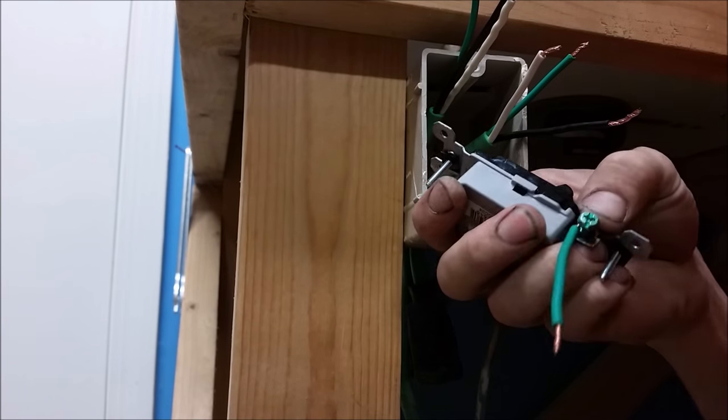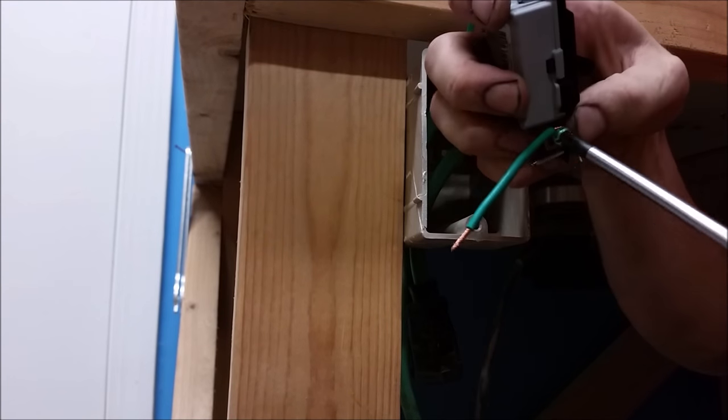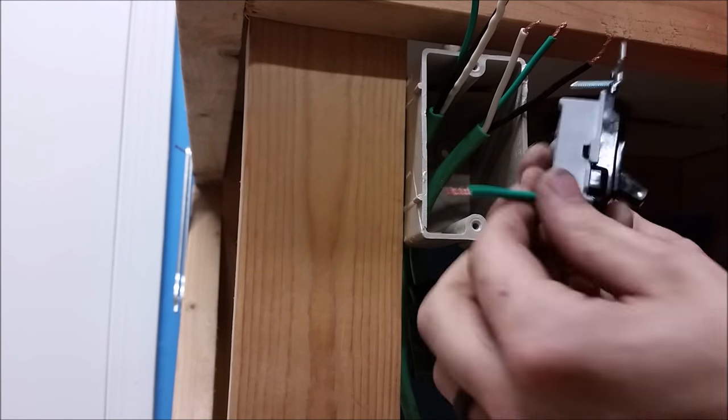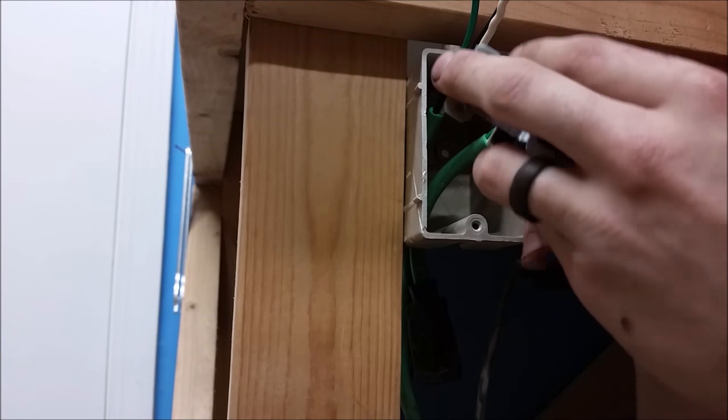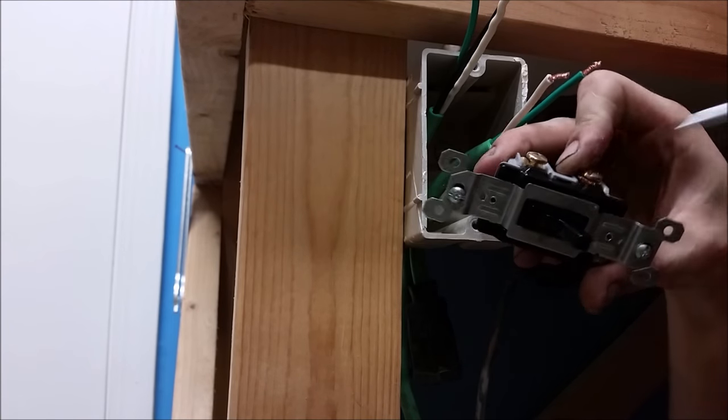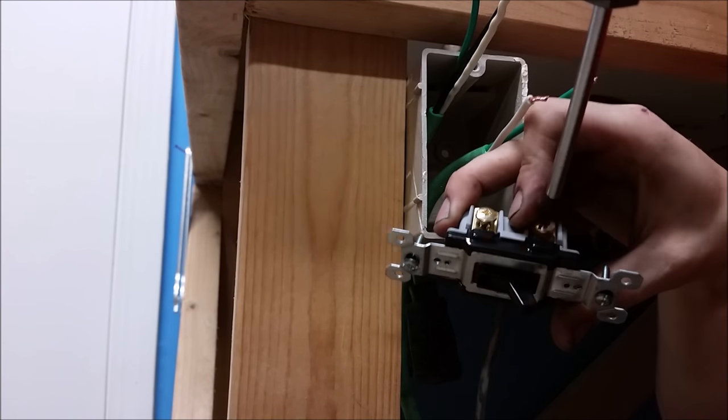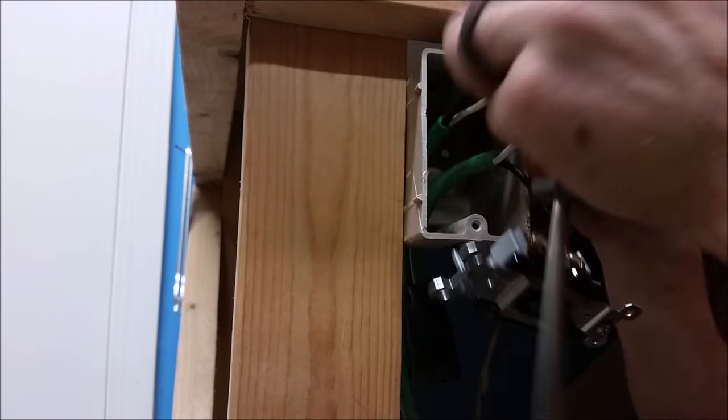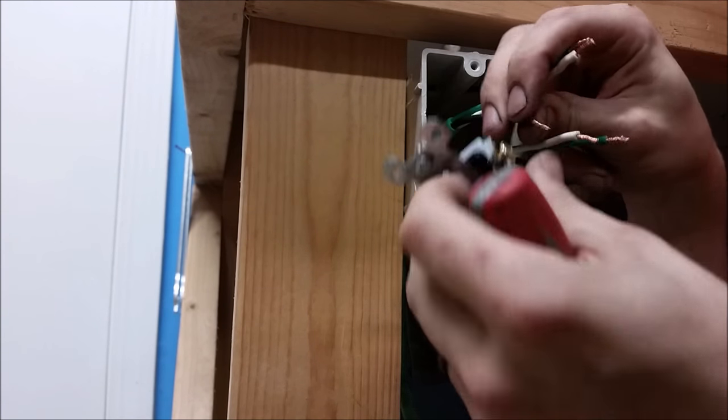We're going to have to use this little ground extension. It's just a three inch piece with stripped wire on both ends. Attach that to the green screw at the bottom of the switch and now we're going to connect both of the brass screws to a hot wire on one wire and the hot wire on the other. This will connect and disconnect the hot wire.